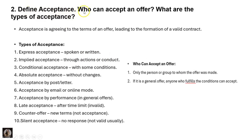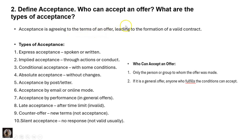The next question is: define acceptance, who can accept an offer, and what are all the types of acceptance? Acceptance is agreeing to the terms of an offer, leading to the formation of a valid contract.